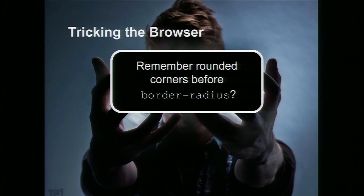Anybody remembers how we used to create rounded corners before we had border-radius available? It was just nuts! But thanks to border-radius, that is all gone. CSS improved a lot, and I would like to see the same thing happen in the browser world, especially with the HTML and the DOM specifications and APIs.